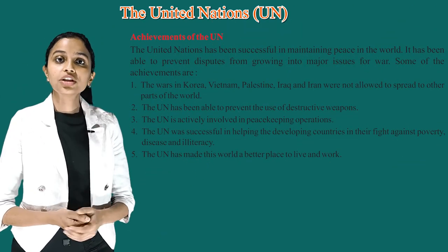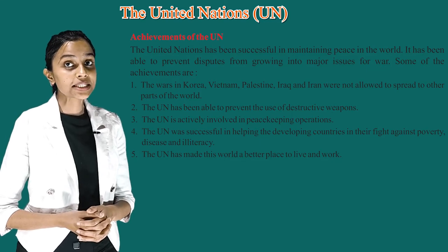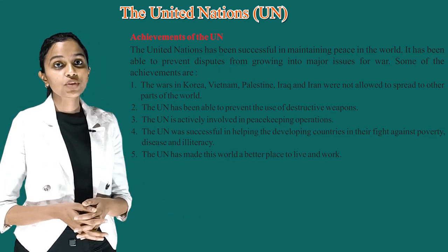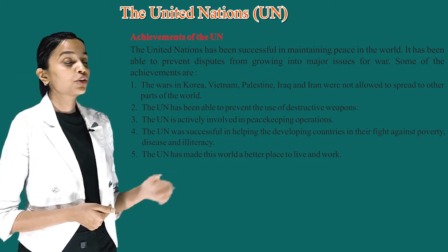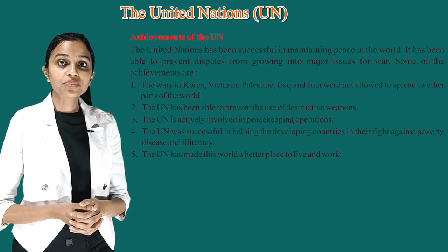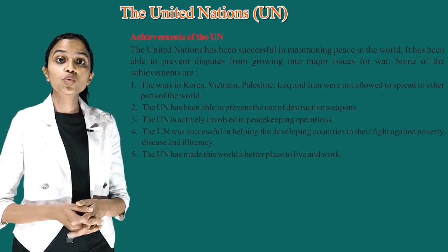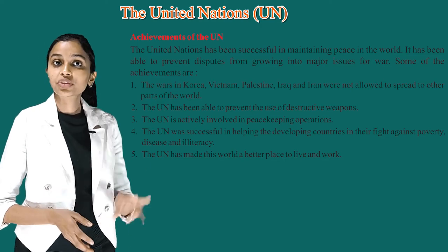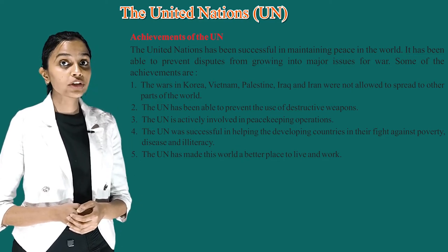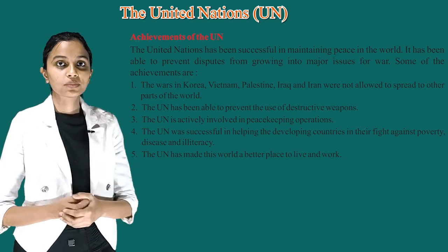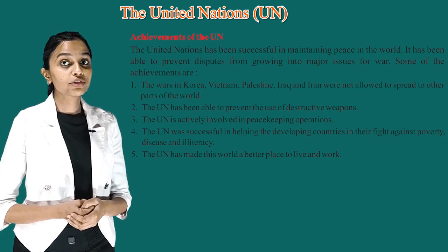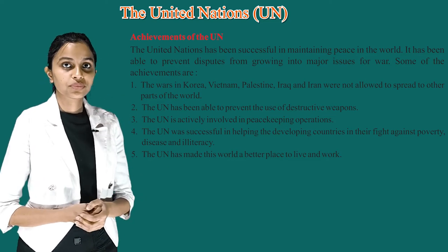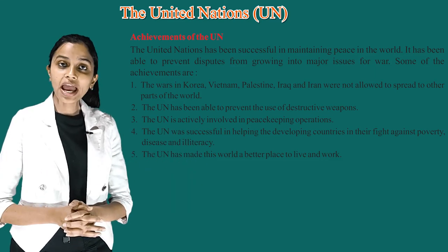Achievements of the UN. The United Nations has been successful in maintaining peace in the world. It has been able to prevent disputes from growing into major issues for war. First, the wars in Korea, Vietnam, Palestine, Iraq and Iran were not allowed to spread to other parts of the world. Second, the UN has been able to prevent the use of destructive weapons. Third, the UN is actively involved in peacekeeping operations. Fourth, the UN was successful in helping developing countries in their fight against poverty, disease and illiteracy. Fifth, the UN has made this world a better place to live and work.